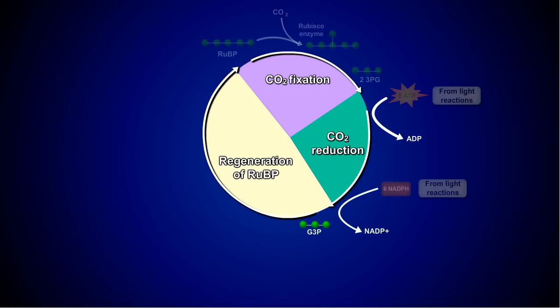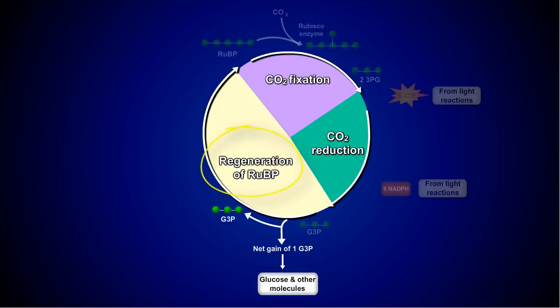ADP and NADP plus return to the thylakoids to be converted back to ATP and NADPH by the light reactions. One of the G3P molecules is set aside to be used as a building block for glucose, but the majority of the G3P molecules move forward into the third phase of the Calvin cycle.